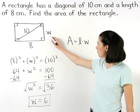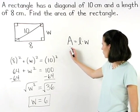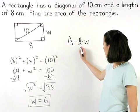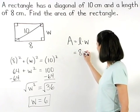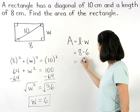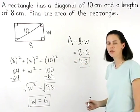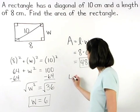Now that we know that the width of the rectangle is 6, we can find the area of the rectangle, which is the length times the width, or 8 times 6, which is 48. So the area of the rectangle is 48 square centimeters.